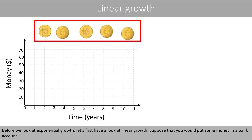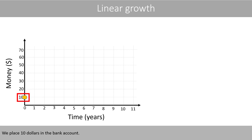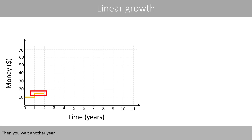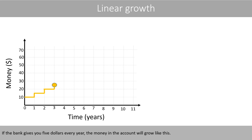Suppose that you would put some money in a bank account. We place $10 in a bank account, then we wait one year. After one year, the bank gives you $5, which means that your money in the bank account is now $15. Then you wait another year, until the bank gives you $5 again. If the bank gives you $5 every year, the money in the account will grow like this.